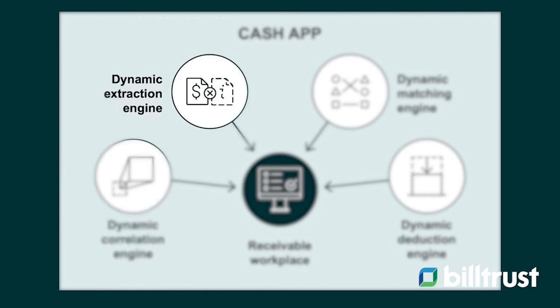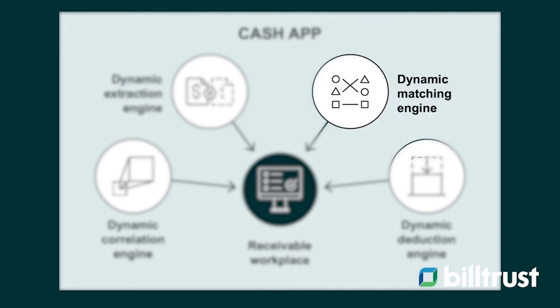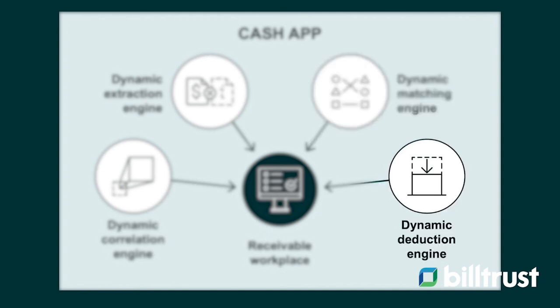We then go to the dynamic extraction engine, where machine learning and OCR runs. The system looks at the remit and extracts any valuable information that could match against the open AR file you provide. From there, we go to the dynamic matching engine, and based on configurations, our system automatically matches the invoice information pulled from the remit against your open AR file. We also run it through a dynamic deduction engine to identify if a customer took any allowable or non-allowable deductions that your team needs to address.